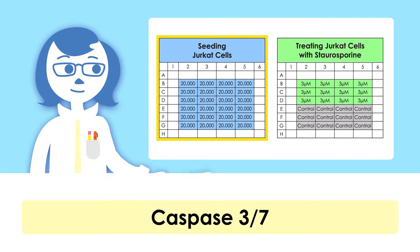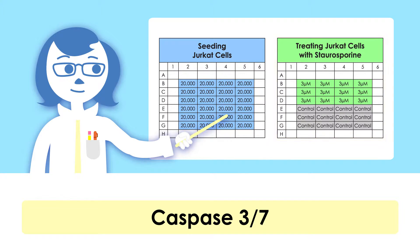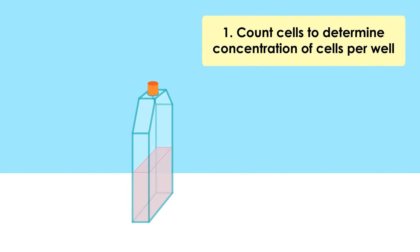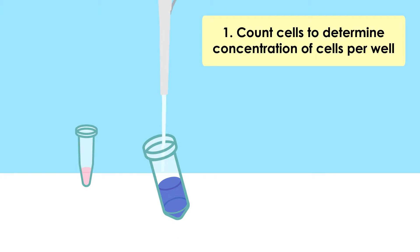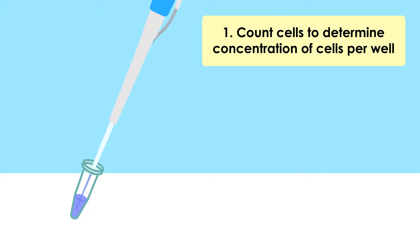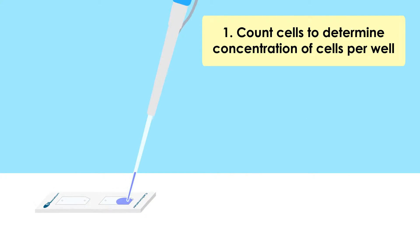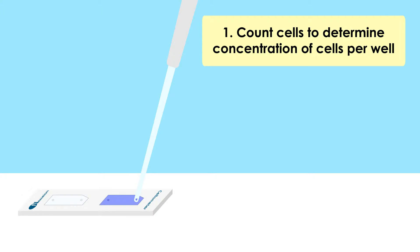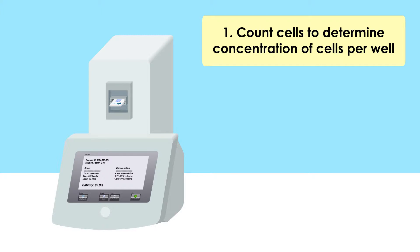Today, I'll show you an apoptosis assay that was performed using suspension Jurkat cells that were treated with 3-micromolar staurosporine. To achieve the best accuracy of your cell plating, first measure the cell concentration by using a Cellometer automated cell counter. Mix 20 microliters of cell sample and 20 microliters of trypan blue. Load 20 microliters of stained sample into the Cellometer chamber slide and perform a cell count to acquire cell number, concentration, and viability of your sample.